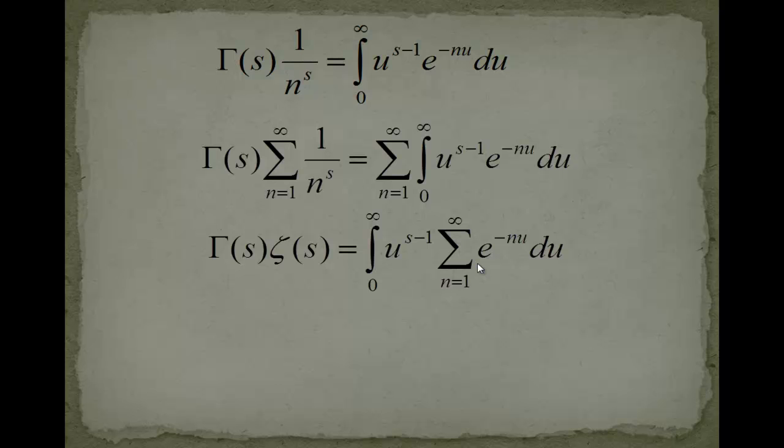Now look at this. What is this? If you would write it out, it would look like e to the minus u plus e to the minus u squared plus e to the minus u cubed and so forth. If we call e to the minus u as a, then we have a plus a squared plus a cubed plus a to the fourth and so forth. Actually, this is the geometric sum.